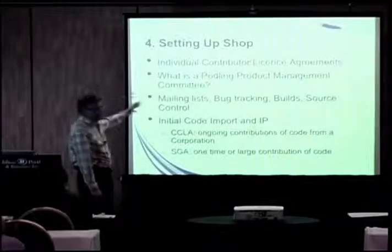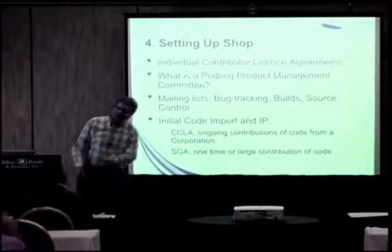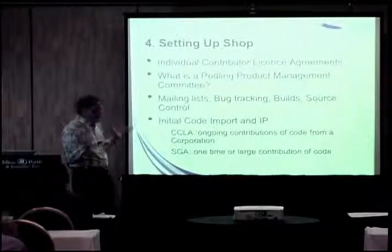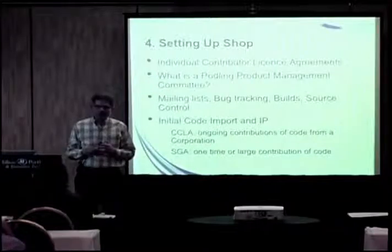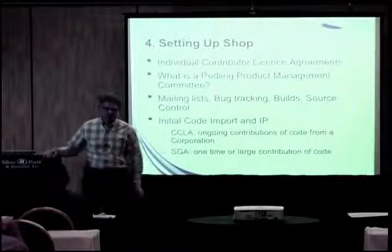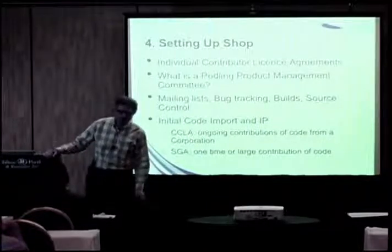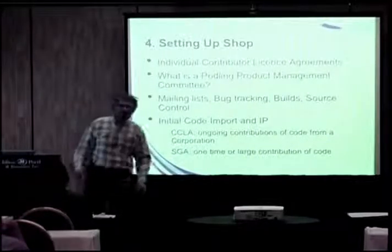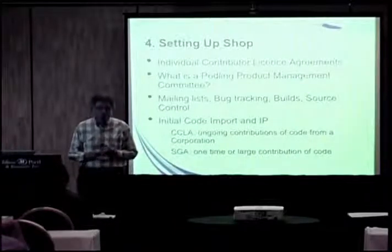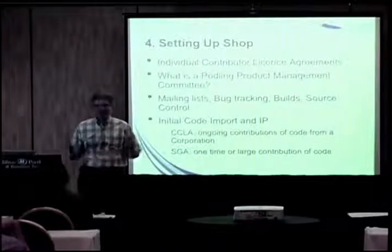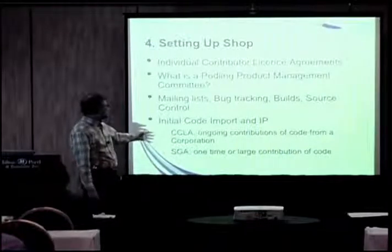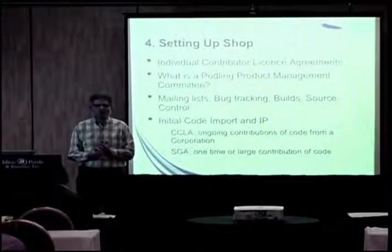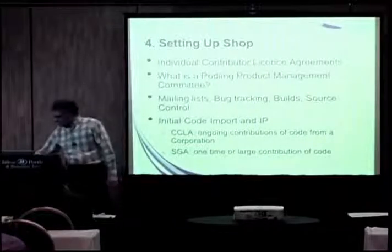Once you have accounts — which you get as a result of filing your ICLA — you can set up source control, mailing lists, bug tracking, builds, and all that. You do this by opening tickets in the Foundation's JIRA bug tracking instance to ask the infrastructure team politely to do things for you, and these things all happen in a couple of days. In most cases, podlings come to the Foundation with a non-trivial body of existing code, which needs more legal handling than just one person submitting one patch. For this we have CCLAs and SGAs — Corporate Contributor License Agreements and Software Grant Agreements.